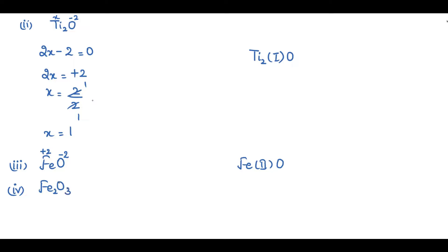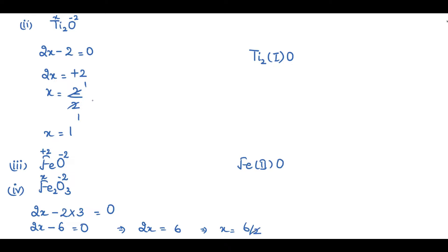The next compound is Fe₂O₃. The oxidation state of a single oxygen is minus 2. I'll assume the oxidation state of a single iron atom as x. There are two atoms of iron, so it will be 2x, and three atoms of oxygen giving minus 2 × 3. Since it is a neutral compound: 2x − 6 = 0, so 2x = 6, and x = +3. The oxidation state of iron is plus 3. In stock notation, this is written as Fe₂(III)O₃.